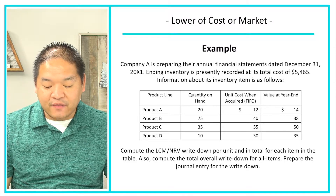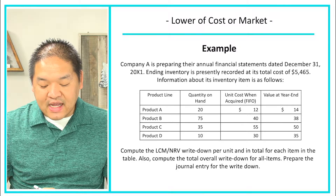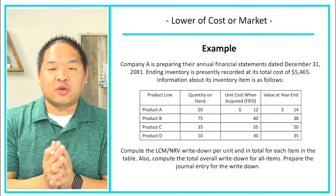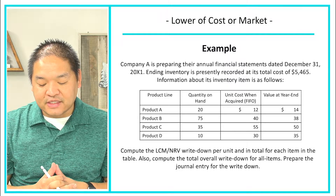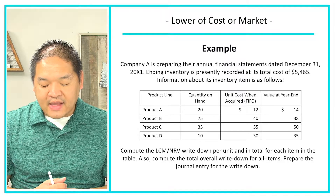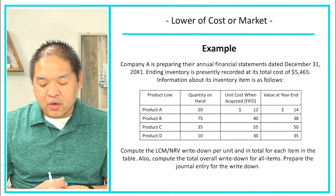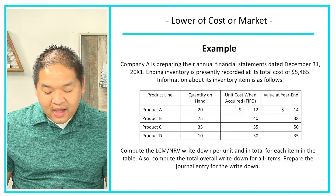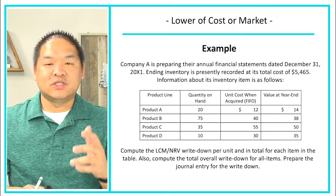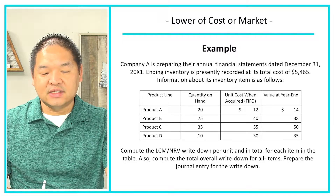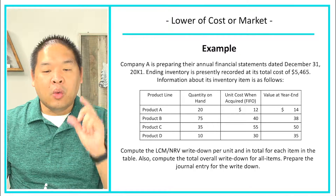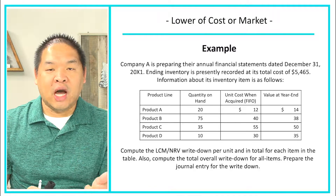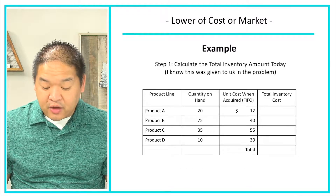Company A is preparing their annual financial statements dated December 31st, 20X1. Ending inventory is presently recorded at its total cost of $5,465. We're given a breakdown of inventory items and asked to: compute the lower of cost or net realizable value, the write-down per unit and in total for each item, compute the total overall write-down for all items, and prepare the journal entry for the write-down.